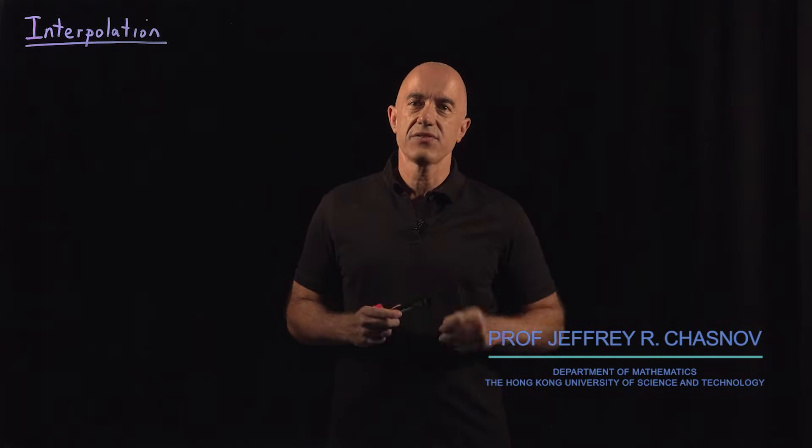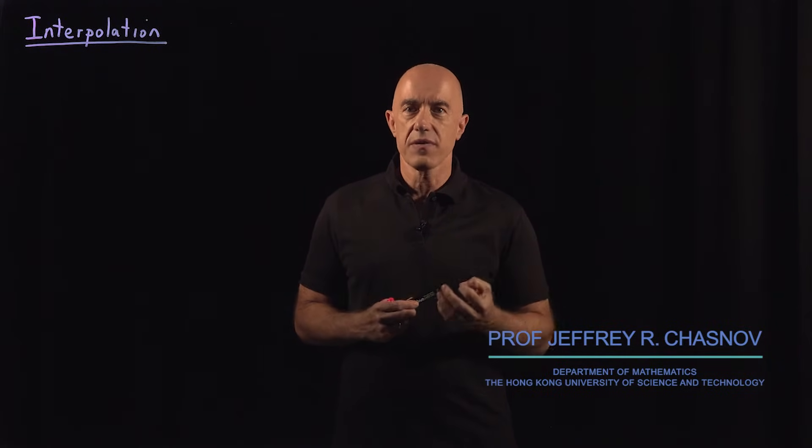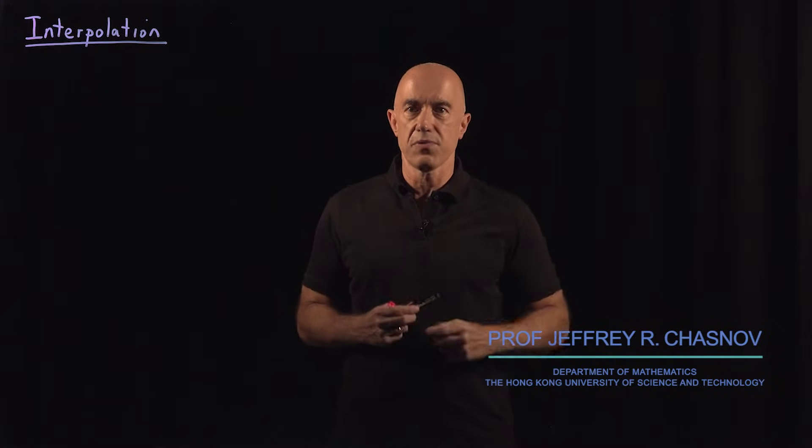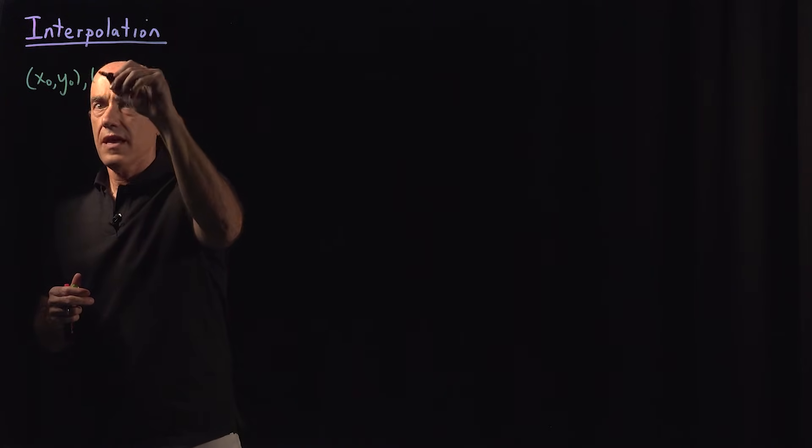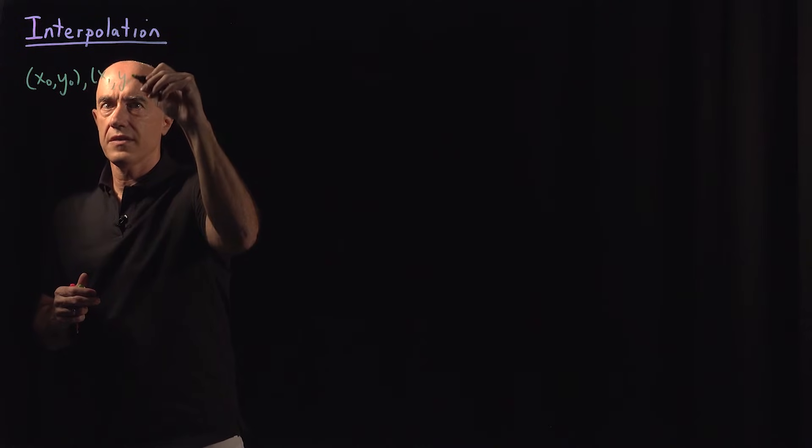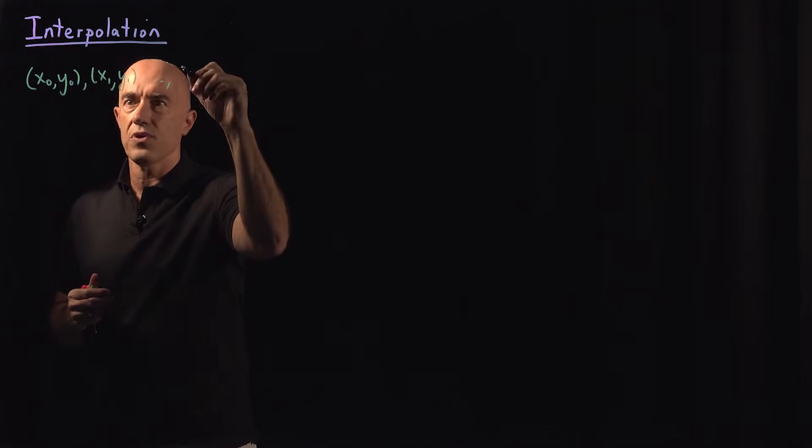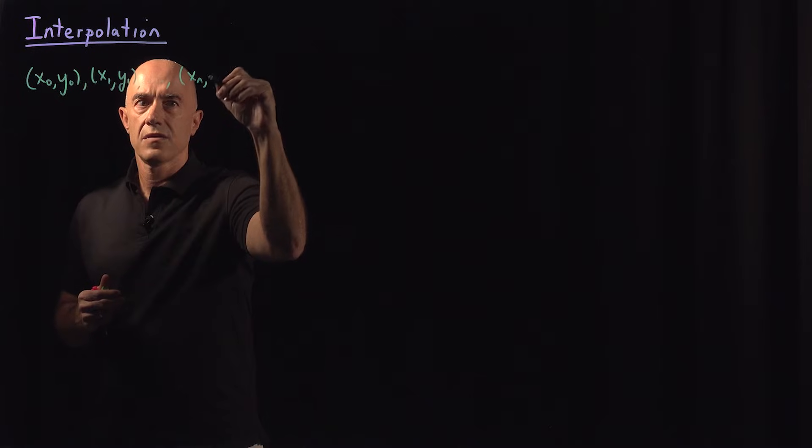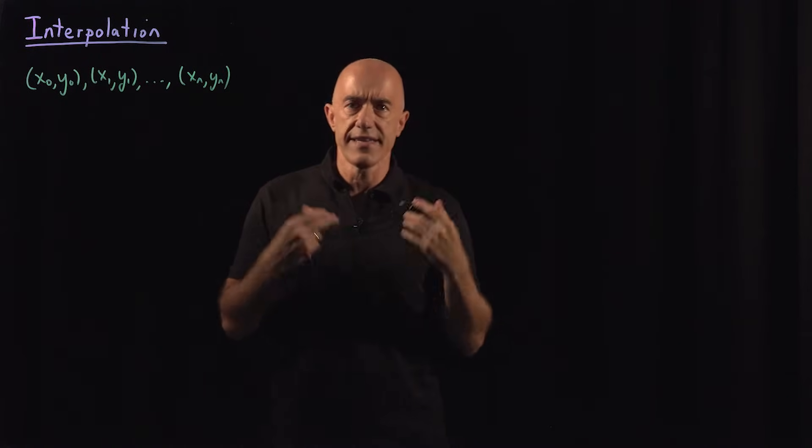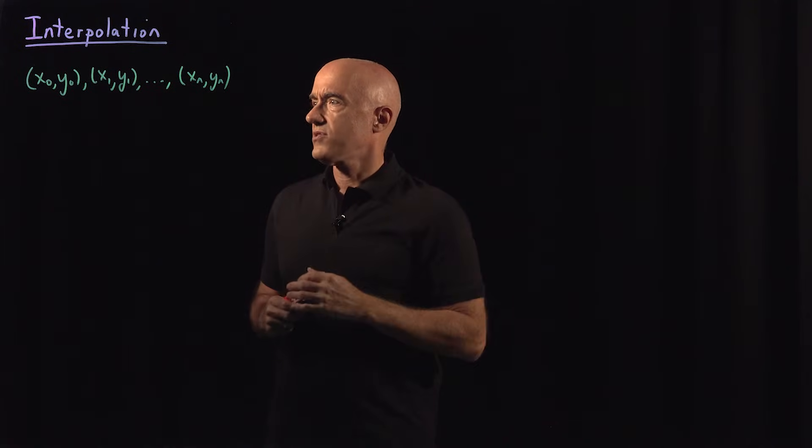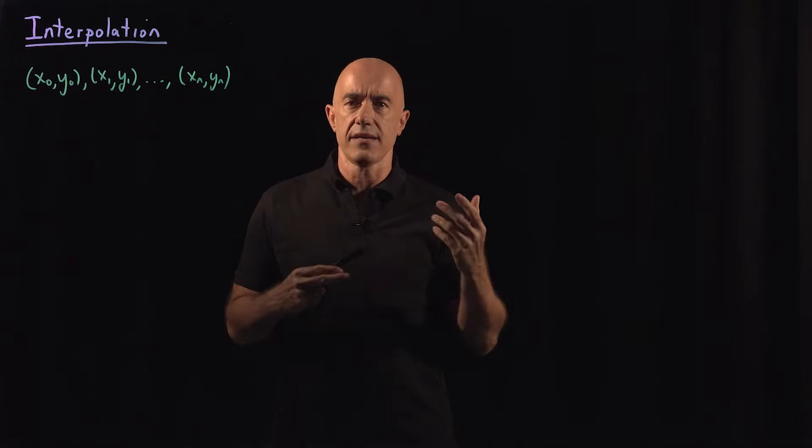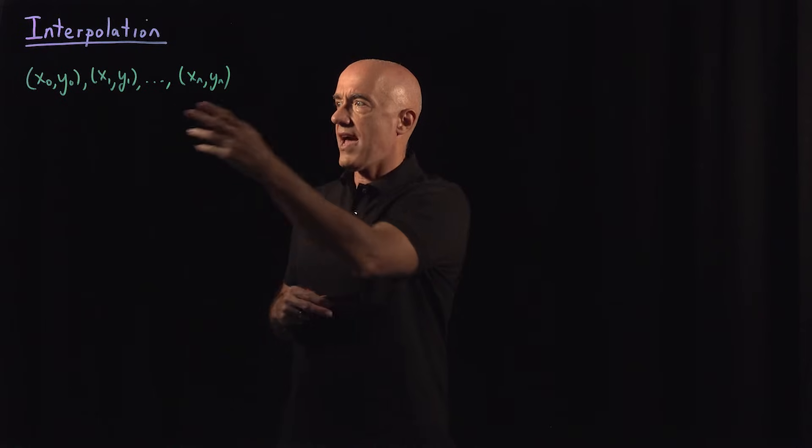In this video, and the next two videos, I want to talk about the numerical problem of interpolation. In interpolation, you are given a set of points. So let's say x naught, y naught, x1, y1. So let's say n plus one points, so xn, yn. These are given, so that means they're supposed to be in exact values. So the y says some underlying function of x,